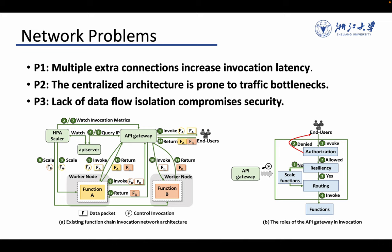However, there are three main network problems in the current serverless network architecture. First, multiple extra connections increase invocation latency. Second, the centralized architecture is prone to traffic bottlenecks. Third, lack of data flow isolation compromises security.